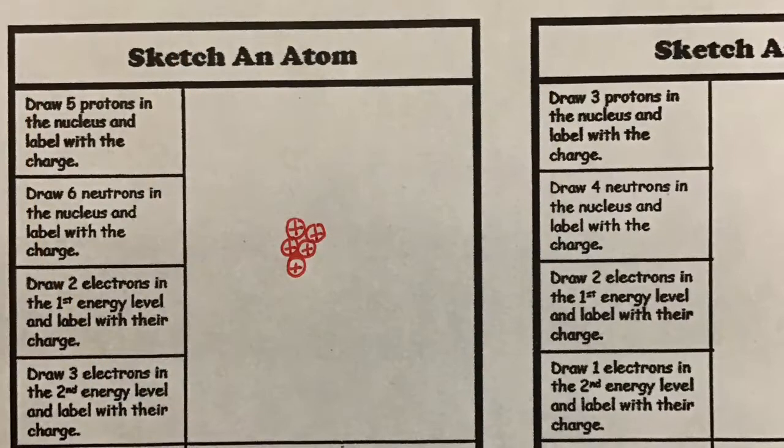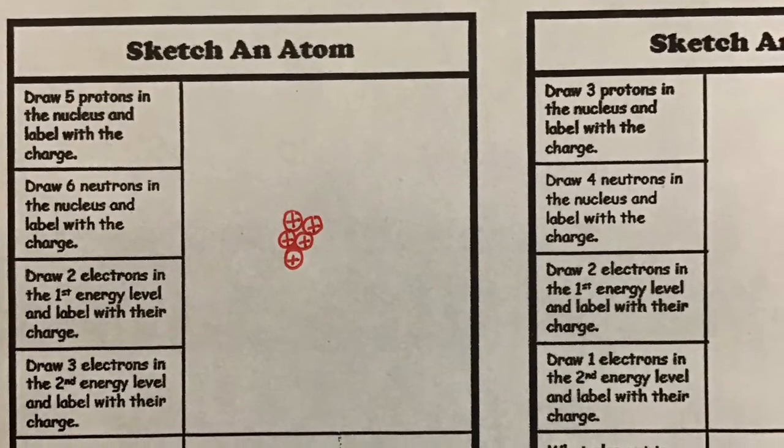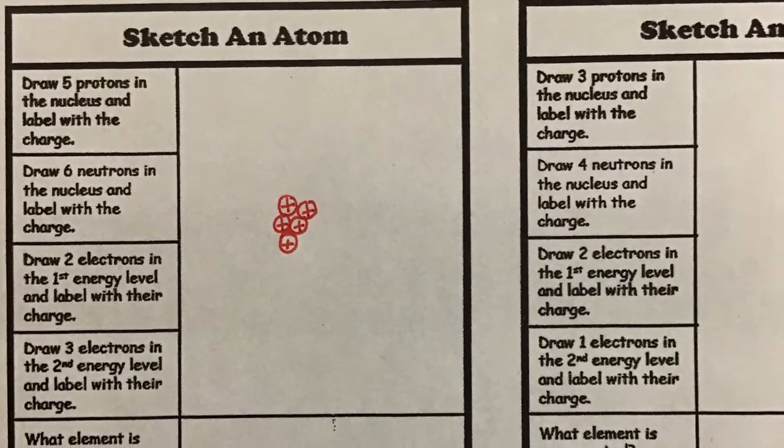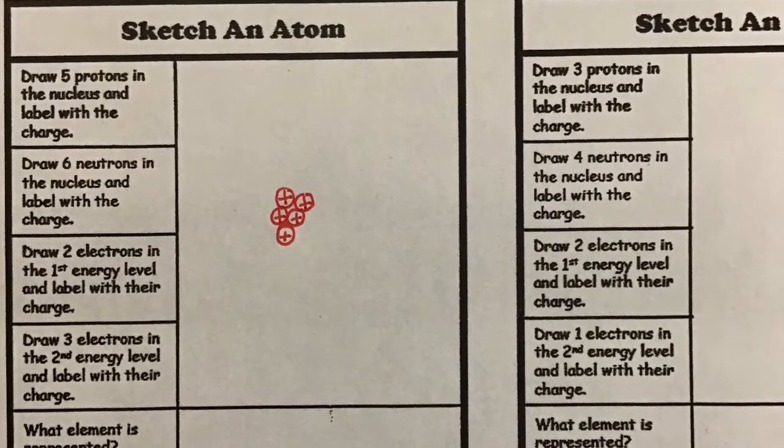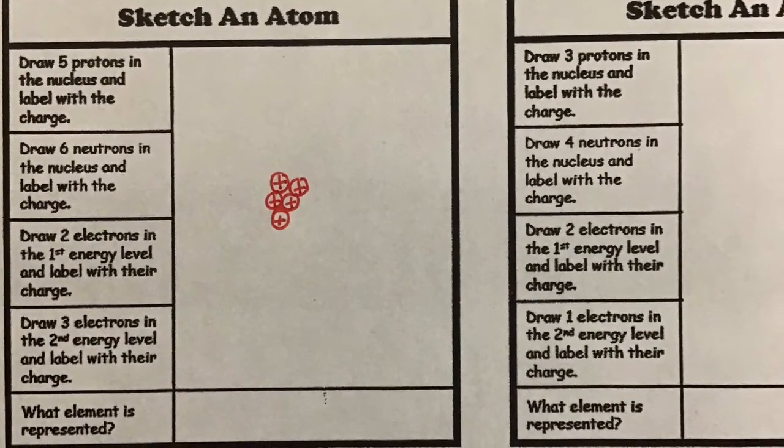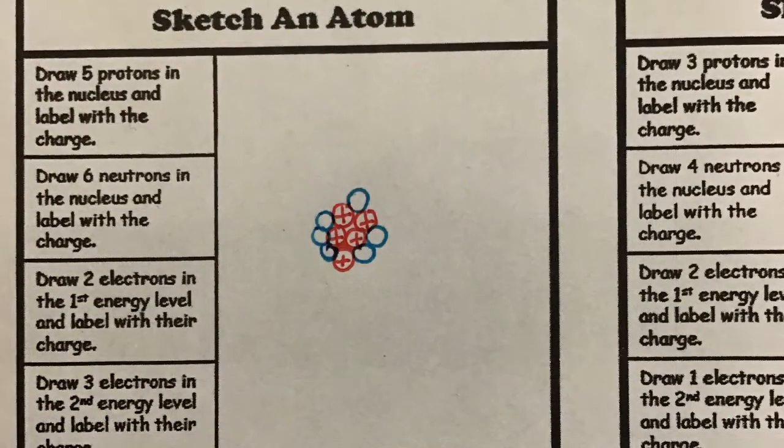Now let's practice drawing a Bohr model. On your note sheet, the directions say to draw five protons in the nucleus and label with their charge. You will draw five small circles in the center and label them with a positive charge. Next it tells you to draw six neutrons in the nucleus. Draw six more circles leaving these circles empty as neutrons are neutral and have no charge.